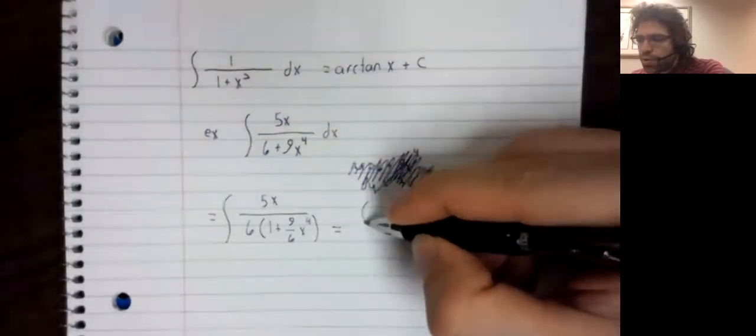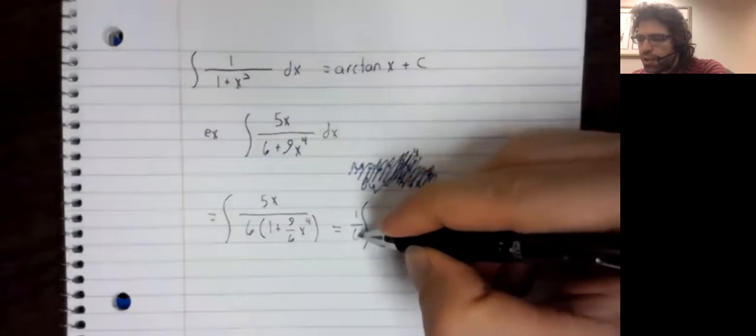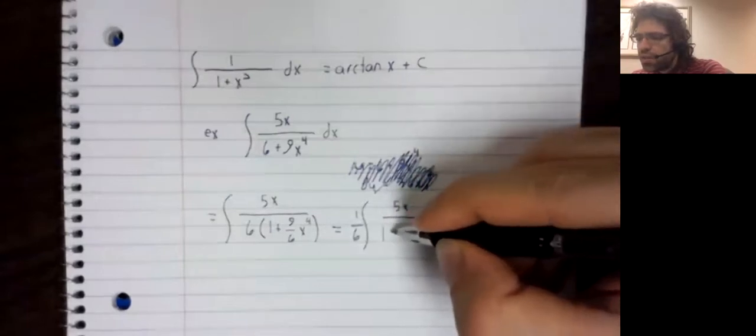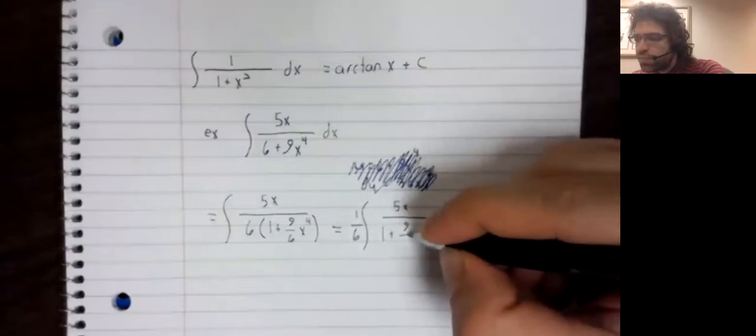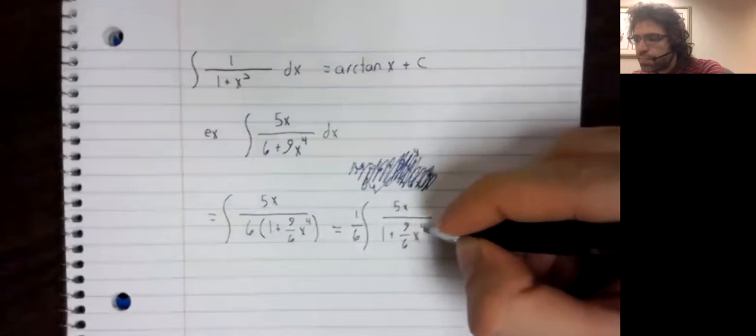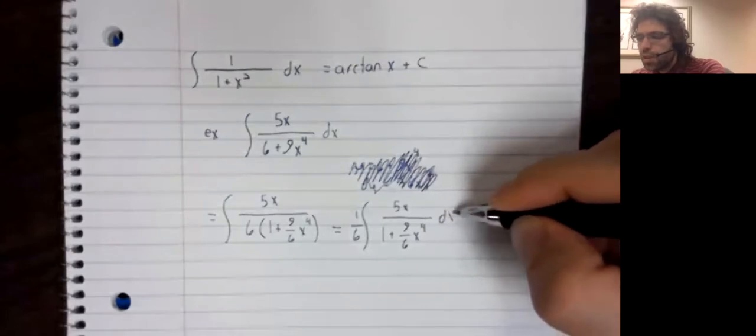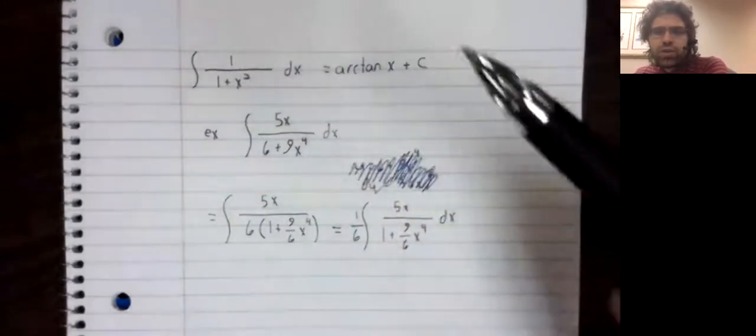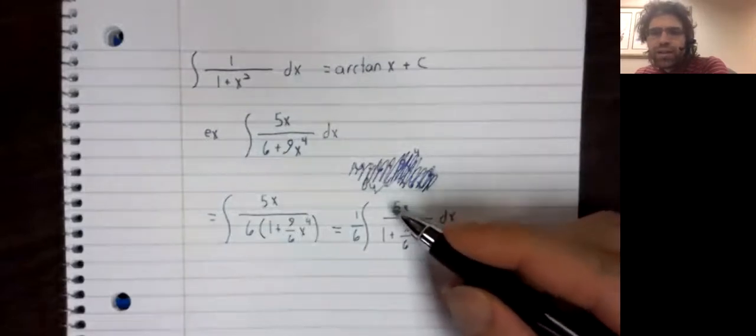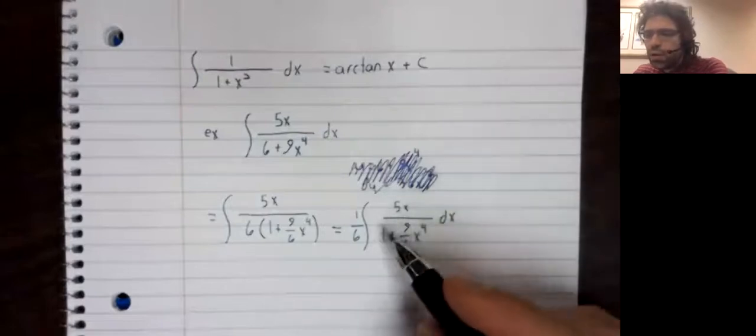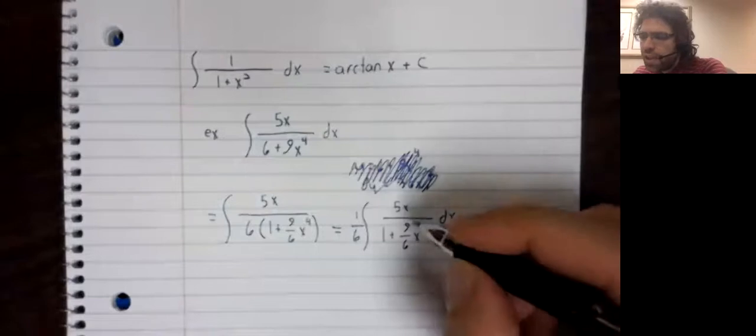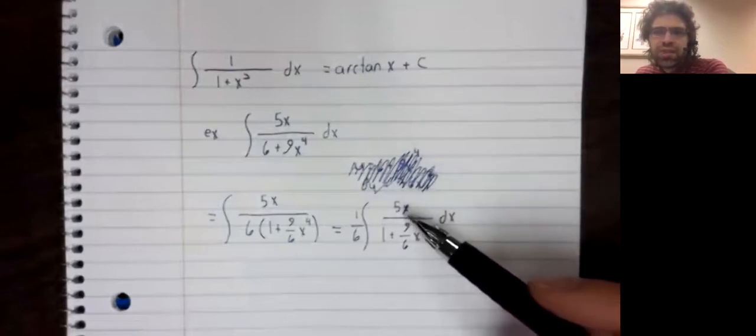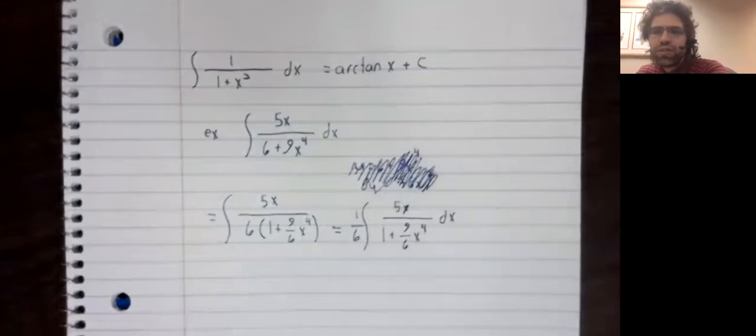If we want a one instead of a six, we can pull that six out. Our other two problems are related. To use this formula, we want a one here, and this five is no problem at all. This five is a constant, it pops right out. But we have an x as well, and that's a more serious issue. We can't just pull x's out of integrals.